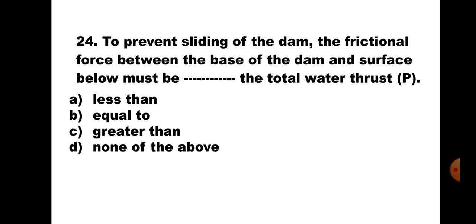Question number 24: To prevent sliding of the dam, the frictional force between the base of the dam and the surface below must be dash dash the total water thrust P. A. less than, B. equal to, C. greater than, D. none of the above. The frictional force develops at the contact surface between the dam base and the surface it rests on. Sliding is caused by the total water thrust. If frictional force is greater than the water thrust, sliding will not occur. Correct answer is C. Greater than.